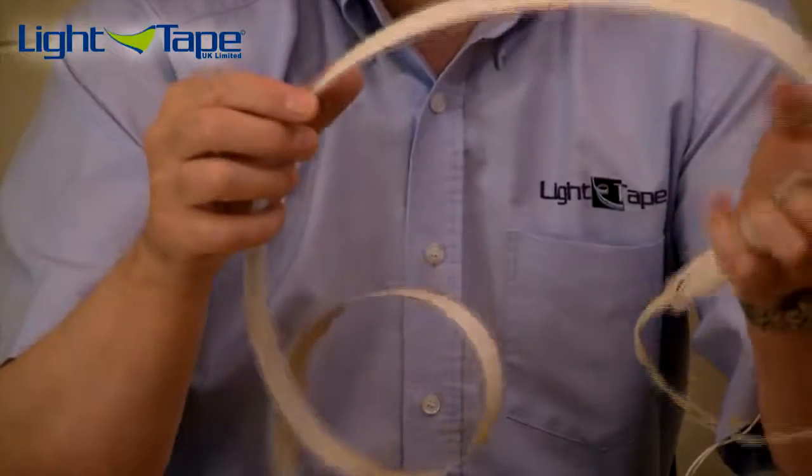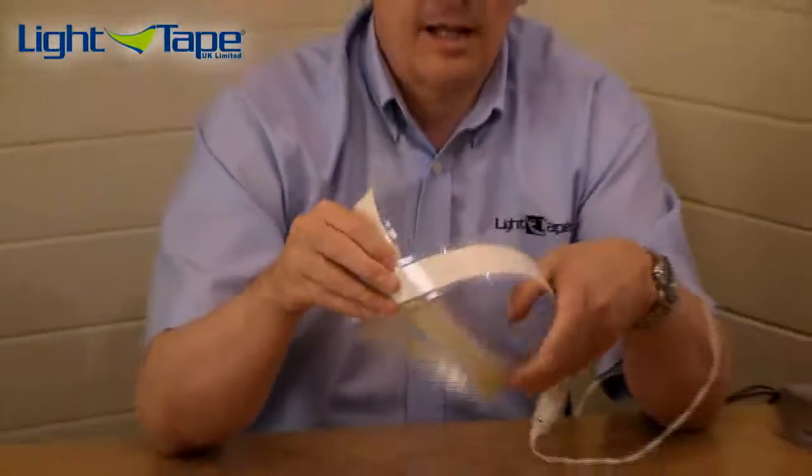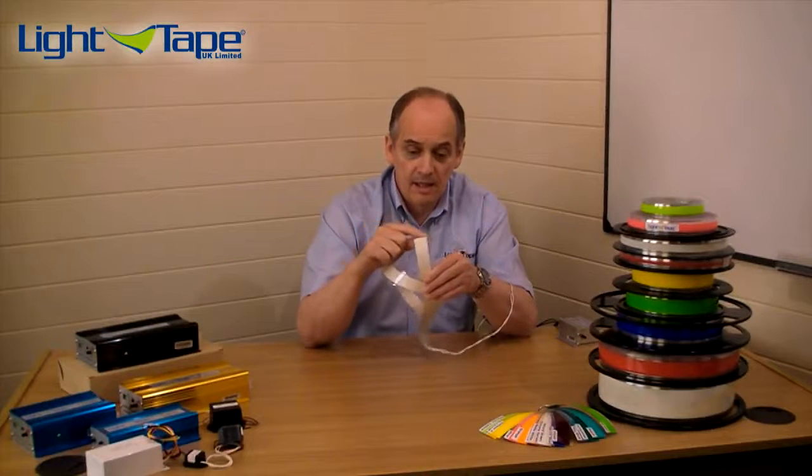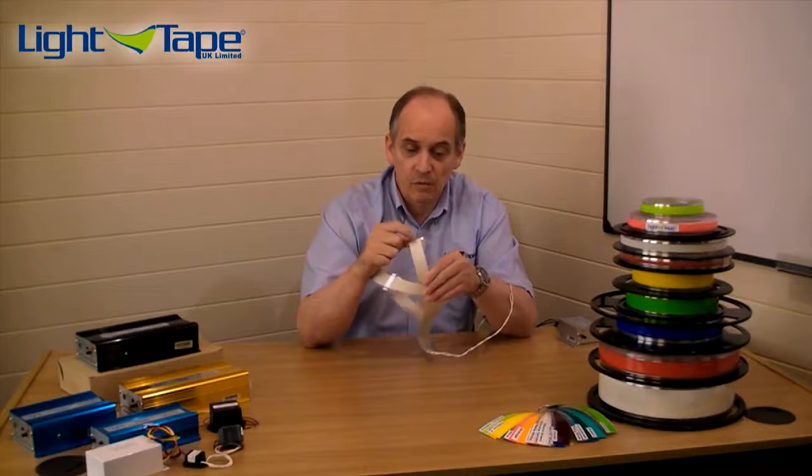Now, we can cut light tape from a hundred meter roll to any length, any desired length, just with a pair of scissors. And as you can see there, light tape has been sealed on the end with Aclar tape.